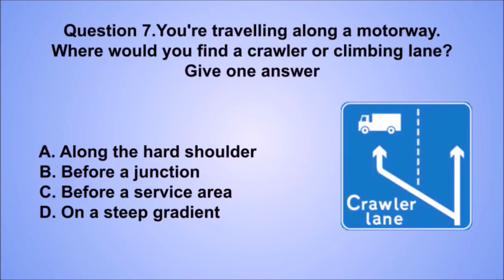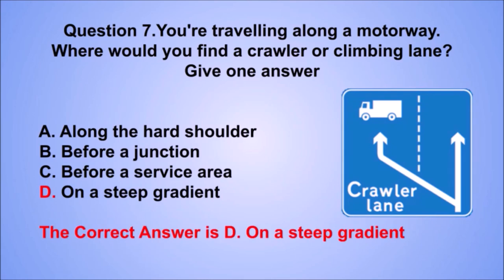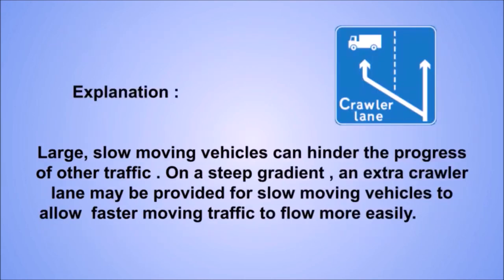Question 7. You're traveling along a motorway. Where would you find a crawler or climbing lane? The correct answer is D: On a steep gradient. Large, slow-moving vehicles can hinder the progress of other traffic. On a steep gradient, an extra crawler lane may be provided for slow-moving vehicles to allow faster-moving traffic to flow more easily.